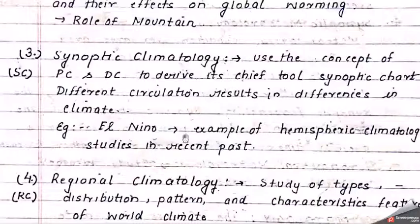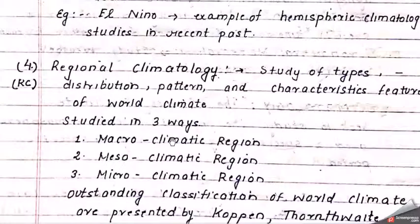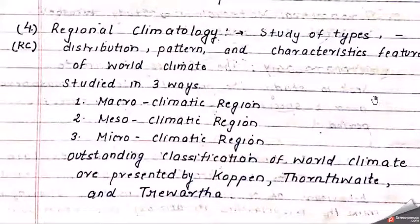El Niño is a basic example of this. Hemispherical climatology has been studied in the recent past. Then we have regional climatology — the study of the distribution pattern and characteristic features of world climates. It examines how various climatic regions exist in different parts of the world: desert regions, tropical regions, temperate regions, and tundra regions. The reasons behind all these varied patterns of vegetation depend on regional climatology. It is further divided into macro, meso, and micro climate regions, which we will study in further lectures.